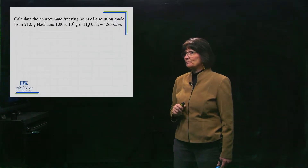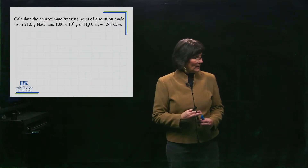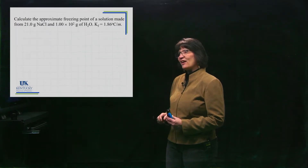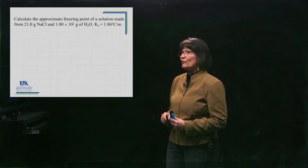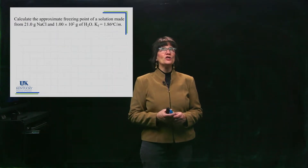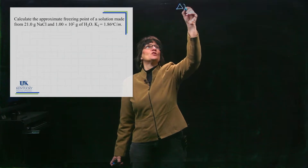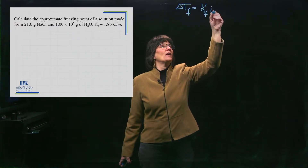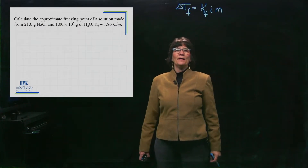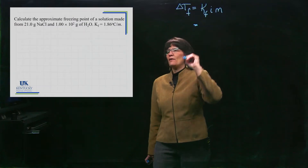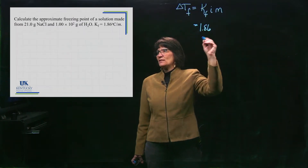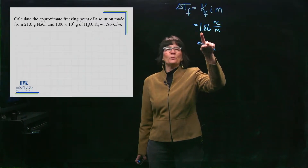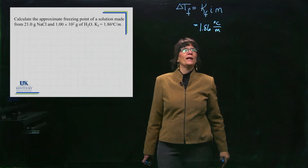Let's work through a problem: calculate the approximate freezing point of a solution made when 21 grams of sodium chloride are dissolved in 100 grams of water, given the freezing point depression constant for water is 1.86 degrees Celsius per molal. We pull out the equation: delta T equals K sub F times i times little m. For every one molal change, the freezing point is depressed by 1.86 degrees.